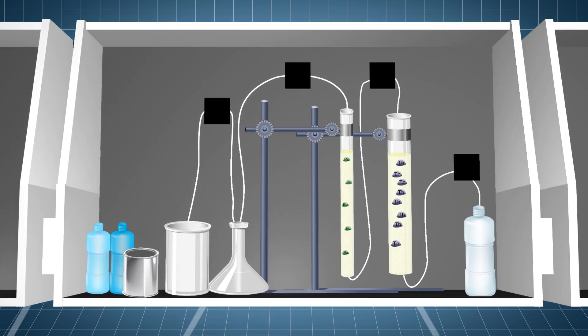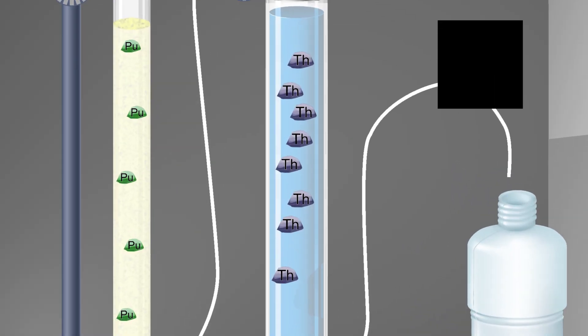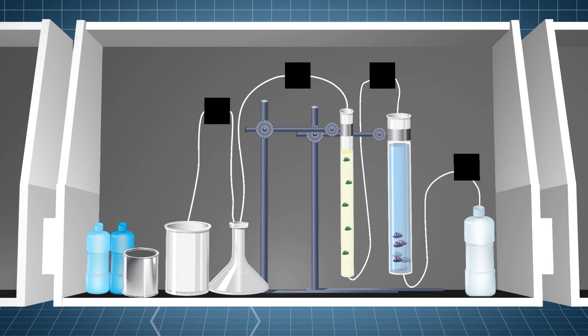Now we have our thorium, but it's still stuck to the resin. Won't do much good there, right? To get the thorium off the resin, a lower concentration nitric acid is pumped through the thorium column. The lower concentration has properties that will ground the ionic charge on the thorium and release it from the resin, creating a new solution of nitric acid and thorium. Now on to Glovebox 3.